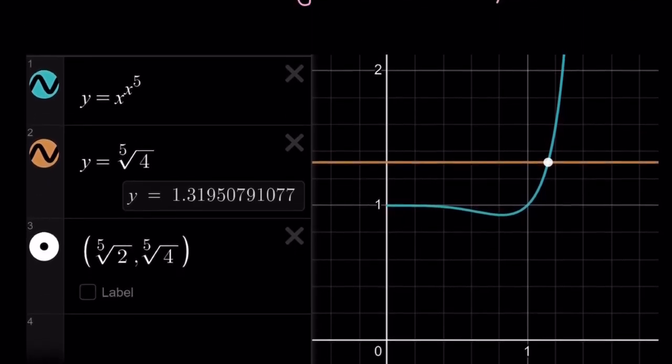So, it kind of goes flat, not flat, but it looks flat. And then it curves. It makes a minimum at some point and then it goes up. And as you can see here, the intersection point has the x coordinate, the fifth root of 2.